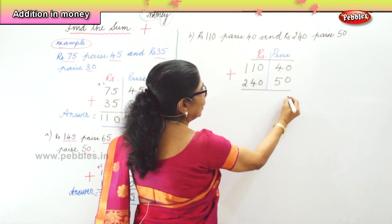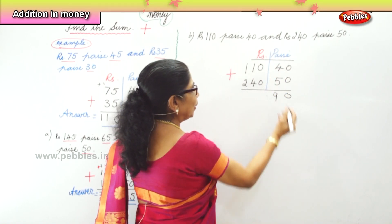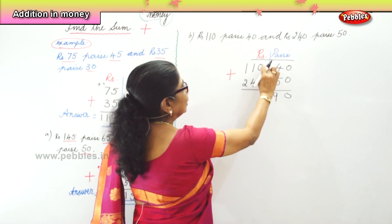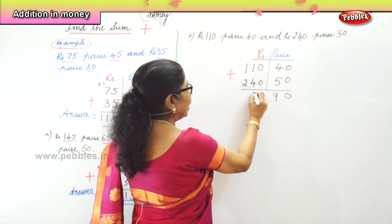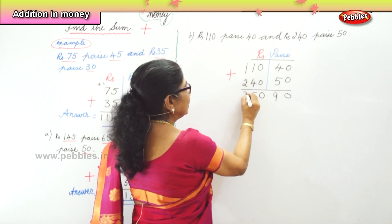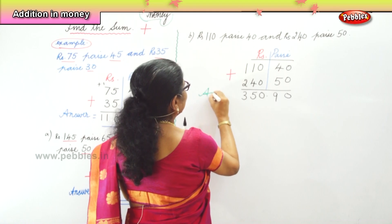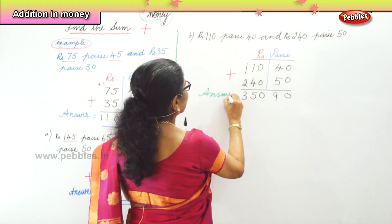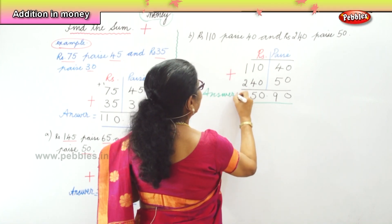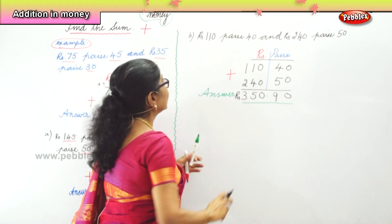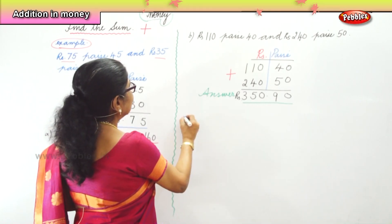Zero plus zero is zero. Five plus four is nine, so we have 90 paise. Now for rupees: zero plus zero is zero, 1 plus 4 is 5, and 1 plus 2 is 3. So our answer is 350 rupees and 90 paise.